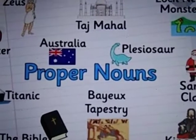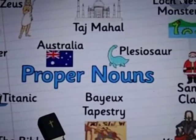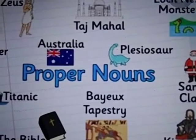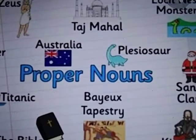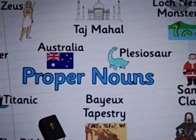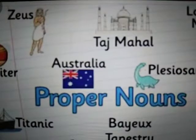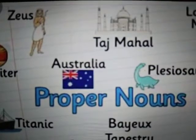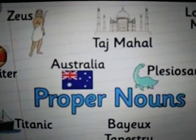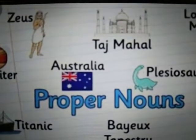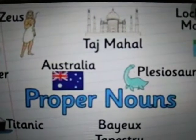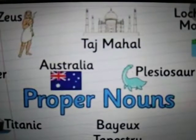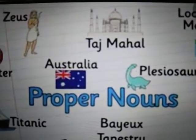Next, we will go to proper nouns. A proper noun is a particular name of a person, place, animal or thing. Proper nouns always begin with a capital letter. For example, Taj Mahal — it starts with a capital letter. Jupiter, Australia, Titanic, the Bible — these are all examples of proper nouns.